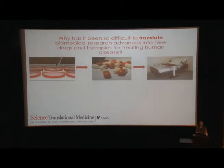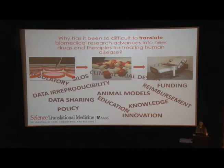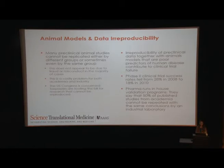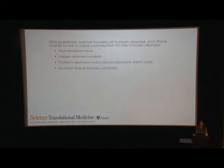Why has it been difficult to translate research advances over the past 50 years into therapies that are actually effective in treating human disease? Two key reasons: animal models and data irreproducibility. As we've heard at this conference, mice are not small people. Many preclinical animal studies cannot be replicated — not because of fraud, but it is a problem. Irreproducibility of preclinical data, coupled with things that work in preclinical models but don't work in clinical trials, has led to a costly problem for academia and industry, with as high as 80-some percent of drugs failing in phase two trials. We do publish animal models of human disease, but we need a clear connection to human disease to suggest this is a strong translational model.